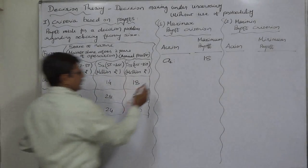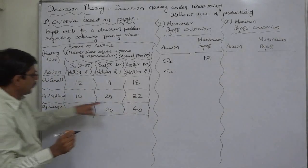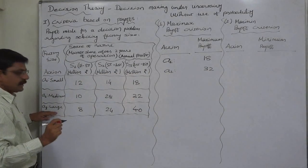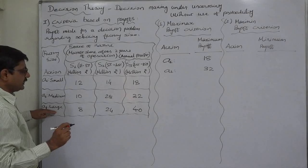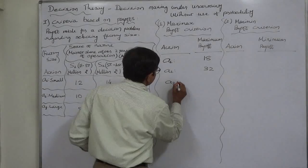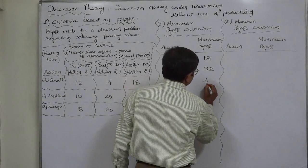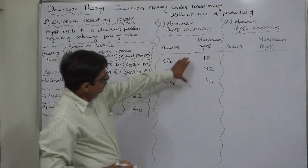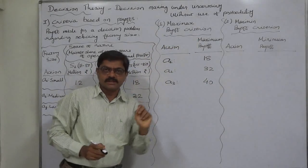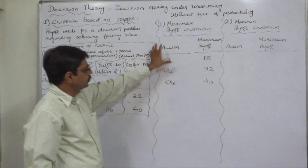A2, that is to create medium size of factory, and the highest possible payoff is 32. The third, last action or strategy or alternative available is A3, that is to create large size of factory, and the maximum possible payoff for that action is 40. These are the maximum payoffs.